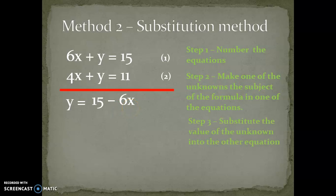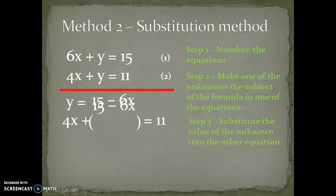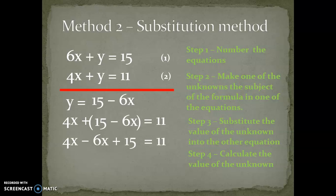Step 3: substitute the value of the unknown into the other equation. I've chosen the second equation, 4x plus y equals 11, and since y equals 15 minus 6x from the first equation, I substitute it in. Step 4: calculate the value of the unknown. So 4x plus (15 minus 6x) equals 11, giving negative 2x plus 15 equals 11, and therefore x equals 2.